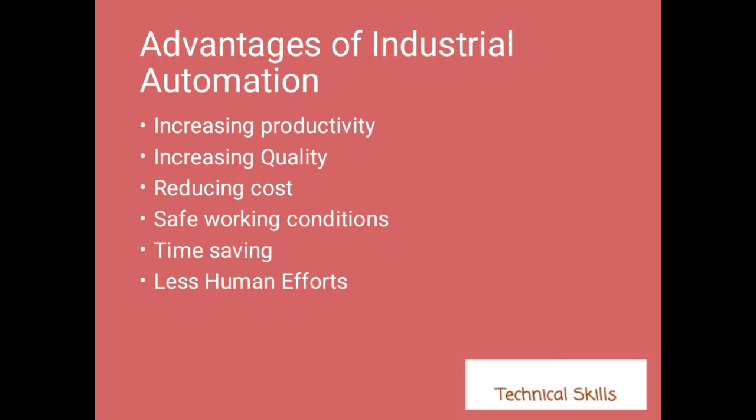The fourth advantage is safe working conditions. There are many conditions where humans cannot work — very hot conditions, very cold conditions, or hazardous conditions — where machines can work instead. So we can use industrial automation in conditions not favorable for humans. The fifth point is time saving. The sixth point is less human effort — we just have to push a button and everything will be done by the machine.